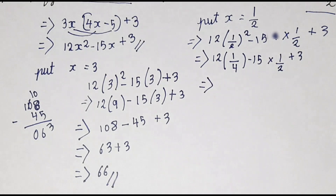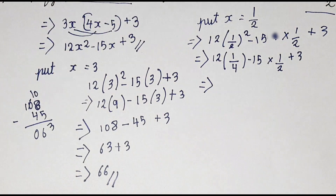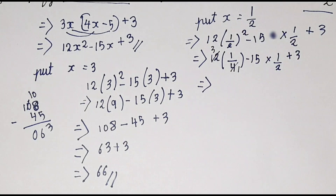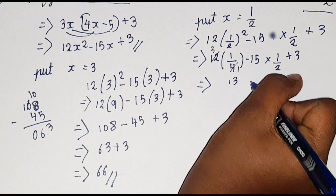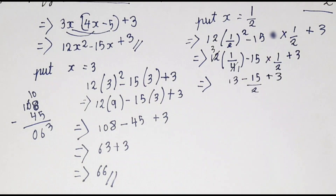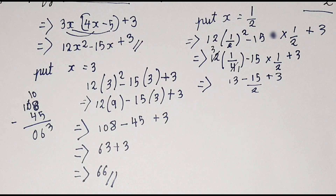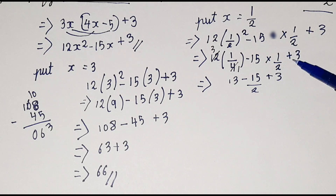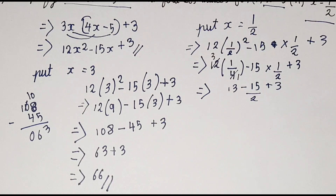Now we shall cancel. Here we can cancel because 4 threes are 12. So we get 3 minus 15 by 2 plus 3. We got minus 15 by 2 because here we have minus 15 into 1 by 2: minus 15 into 1 is minus 15, and the denominator is 2, so minus 15 by 2.